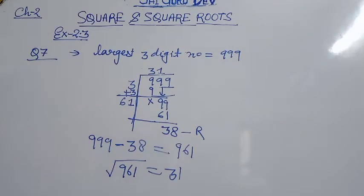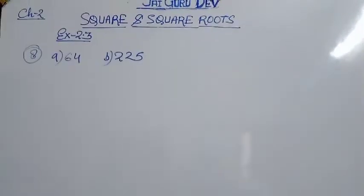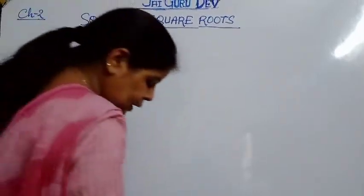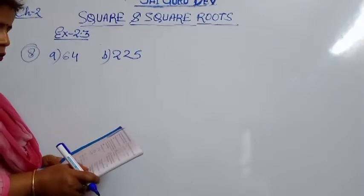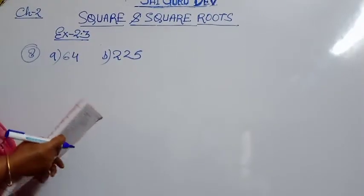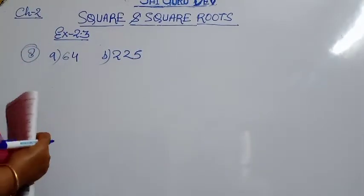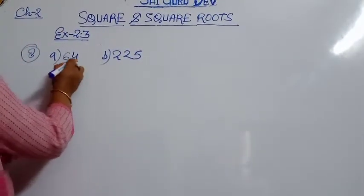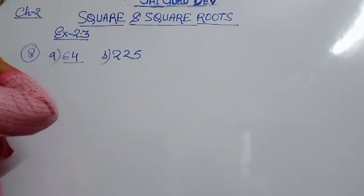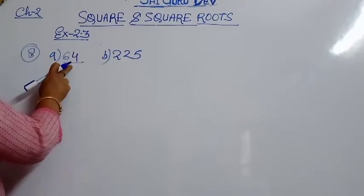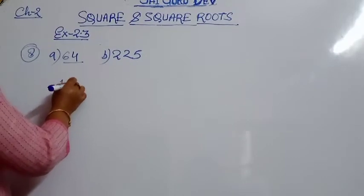Now come to question number 8. He is asking us to find the number of digits in the square root of the following numbers — not to find the actual square root, just how many digits it will have. For example, the square root of 64 is 8, which has one digit.